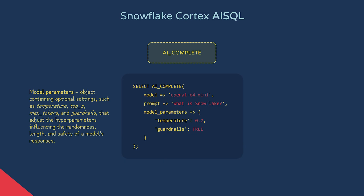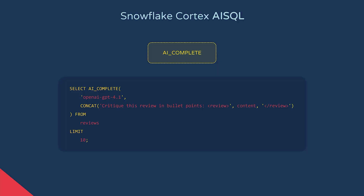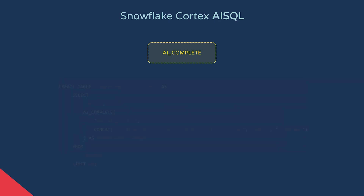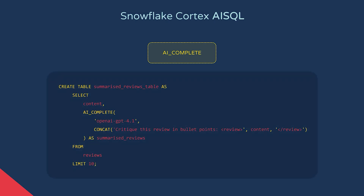In a more practical sense, we could call this model to answer questions about our data. This is an example from the Snowflake documentation where we're using OpenAI's GPT model 4.1 to summarise text for each value of a reviews column from a table called reviews. The bullet-pointed summary could be used downstream to populate a new table column, making it easier to parse or analyse long sections of free text like a review.